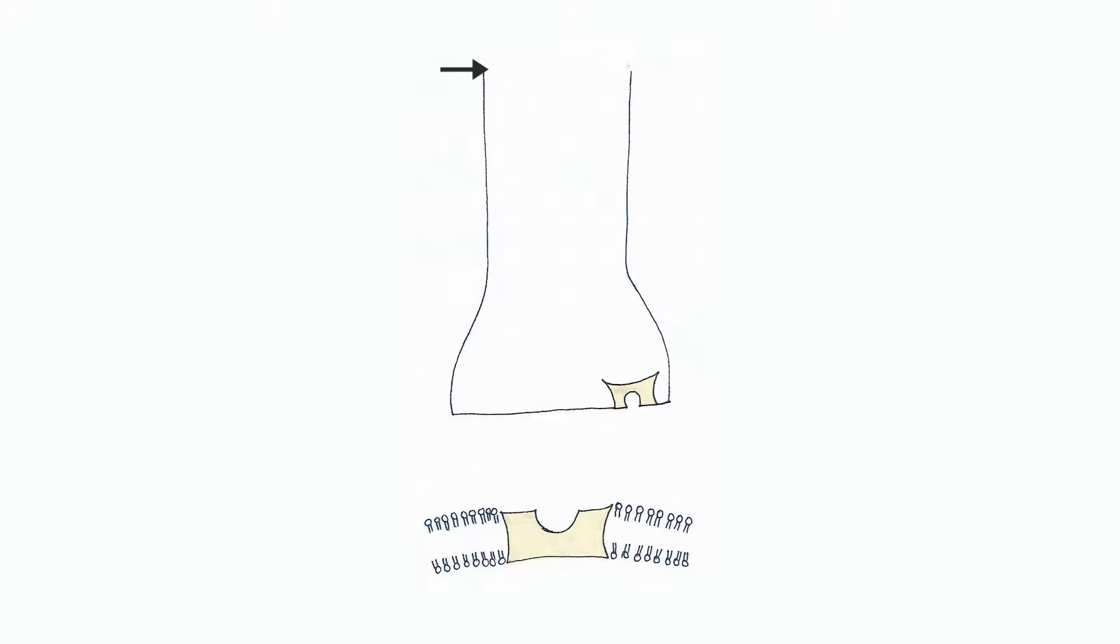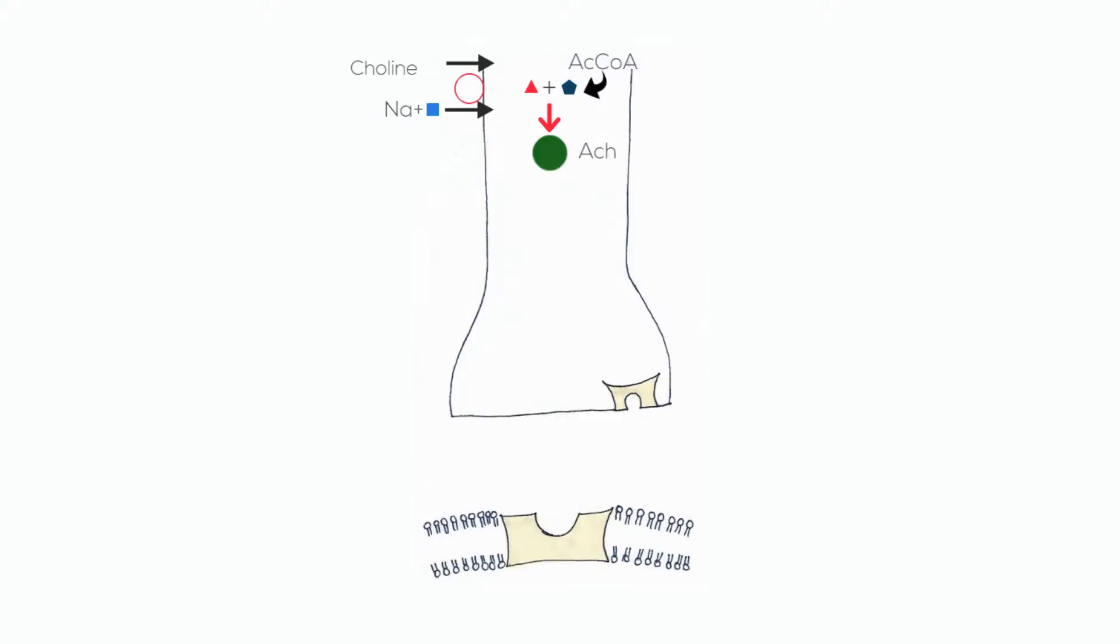Synthesis of acetylcholine starts when choline moves inside the neuron by the help of a sodium-dependent carrier. Inside the neuron, it combines with acetyl CoA to form acetylcholine. After synthesis, this acetylcholine is stored into a storage vesicle.